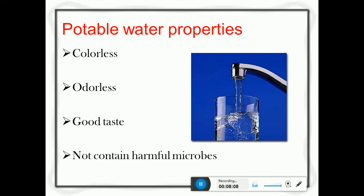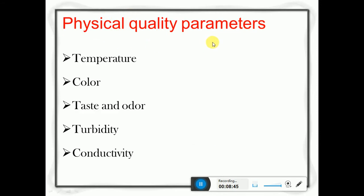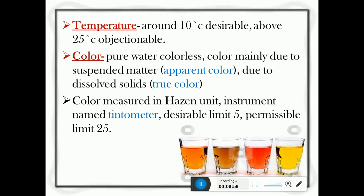Physical impurities relate to potable water characteristics - whatever water we drink should be colorless, should not have any odor, should give good taste, and should not contain any harmful microbial organisms. The water we drink should be clear, without color or odor, and should appear good in taste. Taste usually comes from the minerals dissolved in the water. The physical water quality parameters include temperature, color, taste, odor, turbidity, and conductivity.